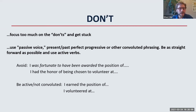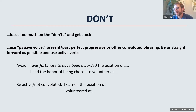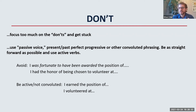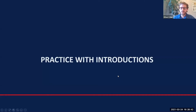You want to draw your reader into the emotional content of the story and into who you are — don't feel like you have to use flowery language or super complex sentence structure. Simple writing is great writing. For example, avoid things like 'I was fortunate to have been awarded the position of' or 'I had the honor of being chosen to volunteer at.' Instead, simplify: 'I earned the position of blank' or 'I volunteered at blank.' Active tense means subject, verb, object — stick to simple, straightforward phrasing.